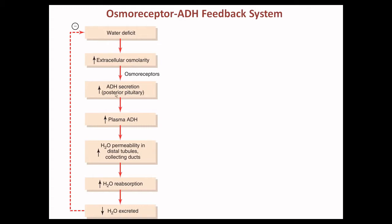Because of that shrinkage, there will be ADH secretion. When ADH increases in the plasma, it will increase the permeability of water in the distal convoluted tubule as well as the collecting duct, so water will be reabsorbed. But when there is extra water, this process is inhibited — it is not a water deficit signal — so water will be excreted, because ADH will not be secreted.